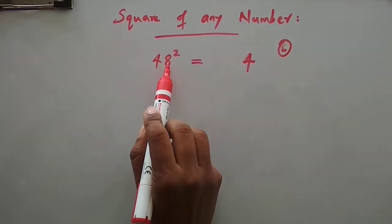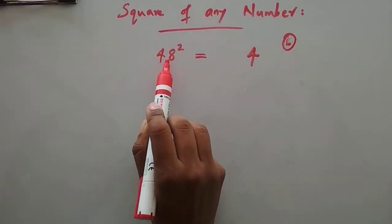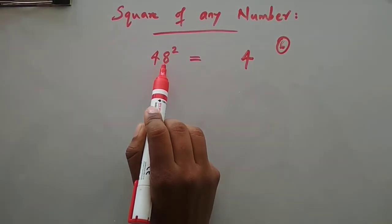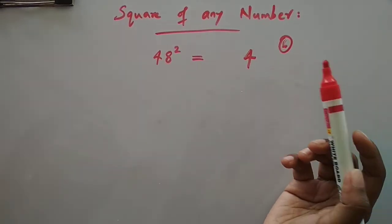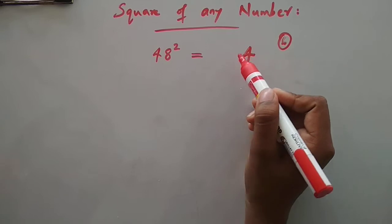Then we have to multiply it with this number. 8 into 8 will be 64. Still we are getting 64, so what we will write is...